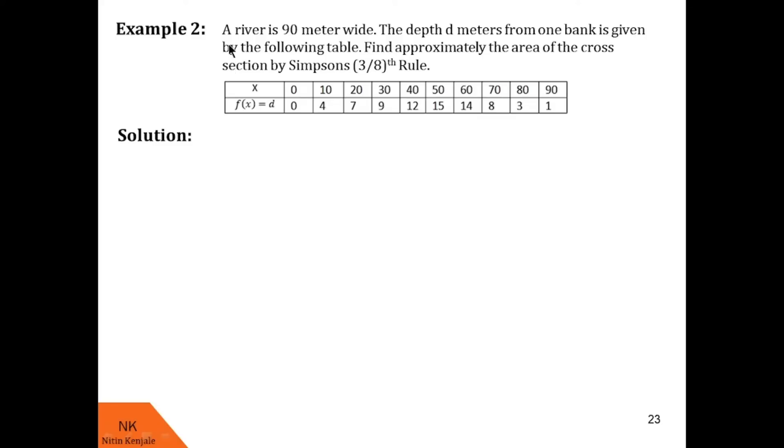Now let us go ahead for next one. Here we are given a river is 90 meter wide. The depth d meters from one bank is given by the following table. Find approximately the area of the cross section by Simpson's 3/8 rule. This is the table of given data values. In first row,